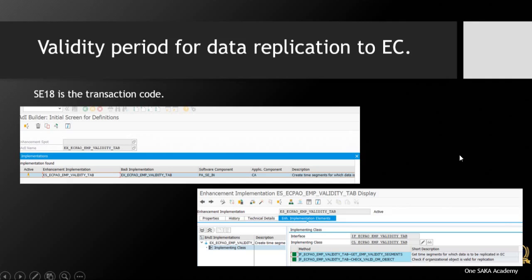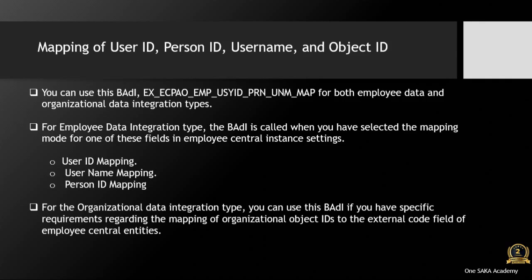Mapping of user ID, person ID, username, and object ID — you can use this BAdI. The BAdI X8POW_EMP_UCEED_PRN_UNM_MAP is used for both employee data and organizational data integration types. For employee data integration type, the BAdI is called when you have selected the mapping mode for one of these fields in Employee Central instance settings: user ID mapping, username mapping, or person ID mapping. For the organizational data integration type, you can use this BAdI if you have specific requirements regarding the mapping of organizational object IDs to the external code field of Employee Central entities.